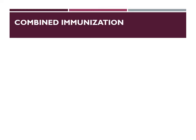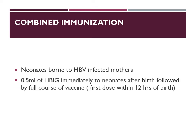Combined immunization means giving both active and passive vaccination together. This is indicated when neonates are born to hepatitis B positive or infected mothers. In this case, immunoglobulin is given immediately after birth at a dose of 0.5 ml, and then vaccination is started within 12 hours of birth — rather than waiting for the standard six, ten, and fourteen week schedule.